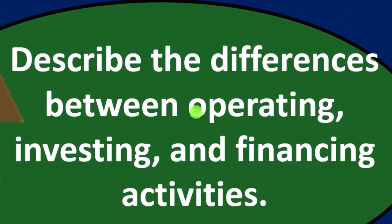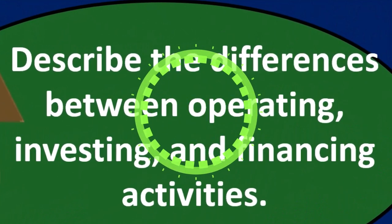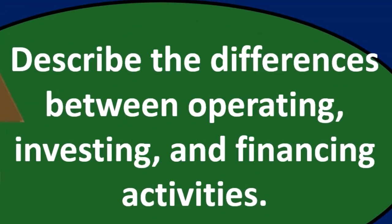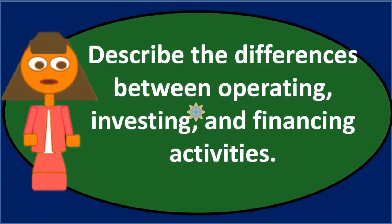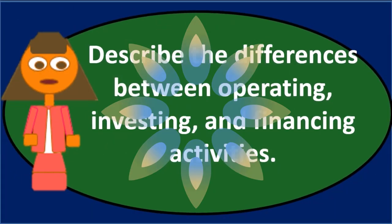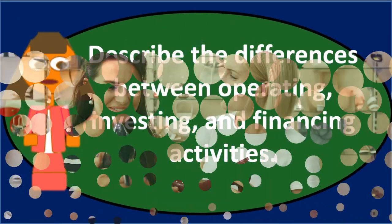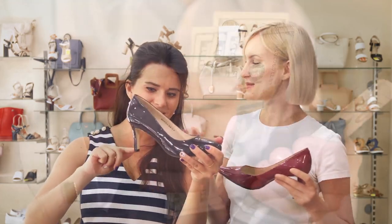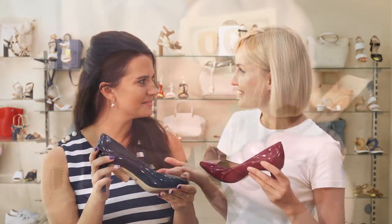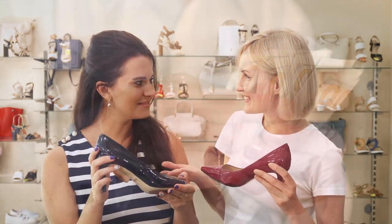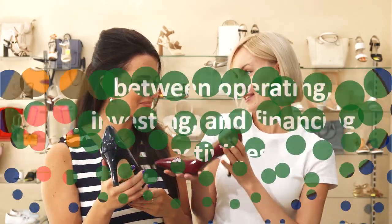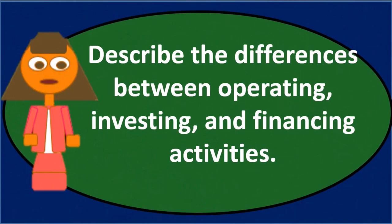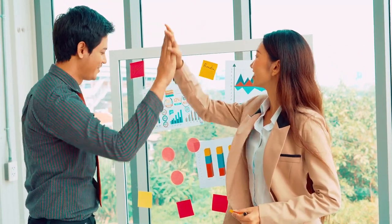We're looking at the change in cash — what did cash do over the time period — and we're breaking that difference out into the major types of categories: operating, investing, or financing. These three categories tell us what the major components are for the activity happening within cash.